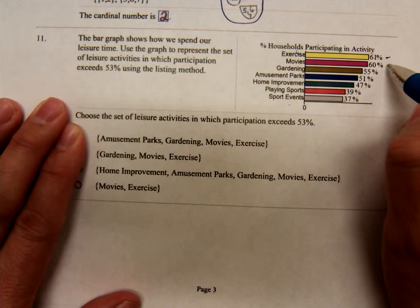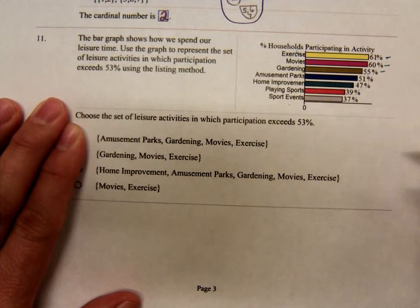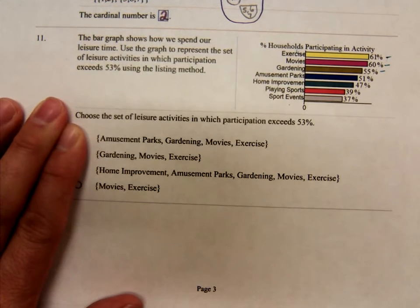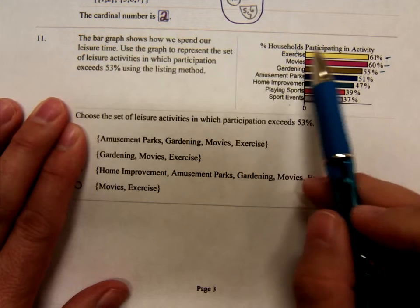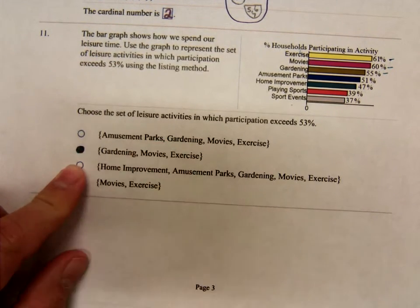Exercise, movies, and gardening. The others don't exceed 53%. Exceed means more than, right? So gardening, movies, and exercise. There it is, number 11.